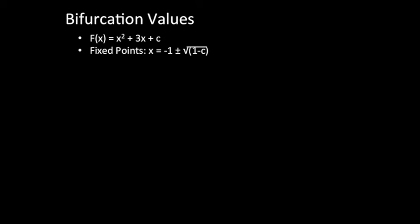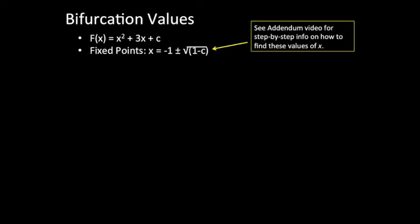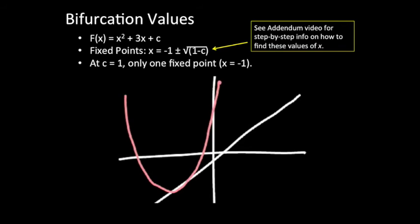If we solve for x and if we use the quadratic equation, we find that these are our potential answers for fixed points. Negative 1 plus or minus the square root of 1 minus c. What happens if c is equal to 1? Well, then in that case, the square root term goes to 0, and negative 1 plus or minus 0 is just negative 1. So that means that when c is equal to 1, we see only one fixed point. The parabola is only just barely hitting the y equals x line in just one fixed point.